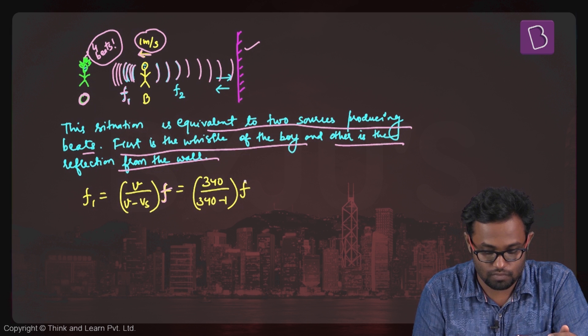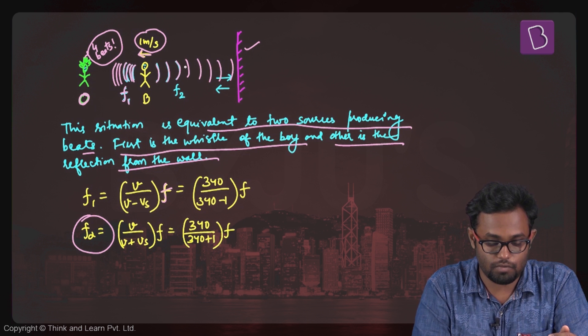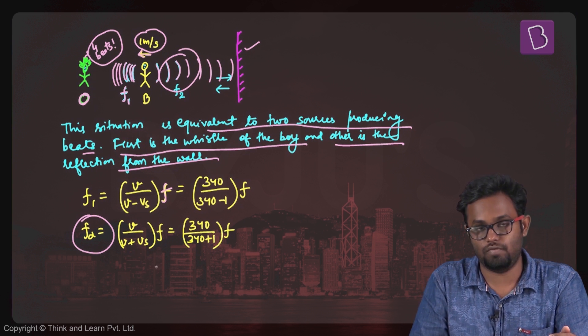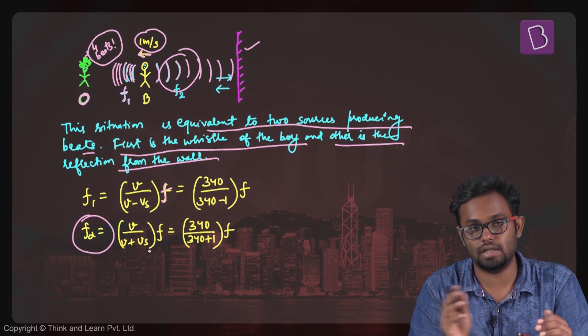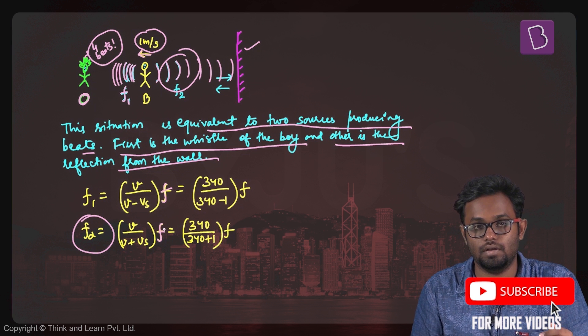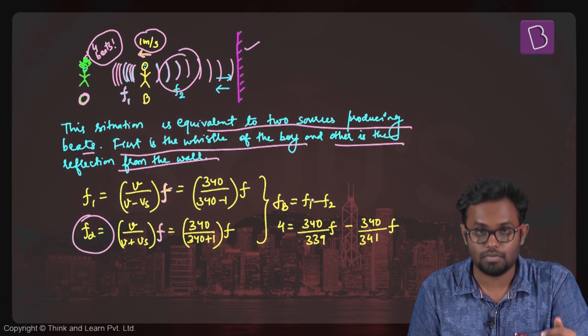f2 will be the frequency which is over here. That will be v upon v plus vs into f, because the source, you know, from that side is moving away into the original frequency, which is f. That makes 340 upon 340 plus 1 into f, right?